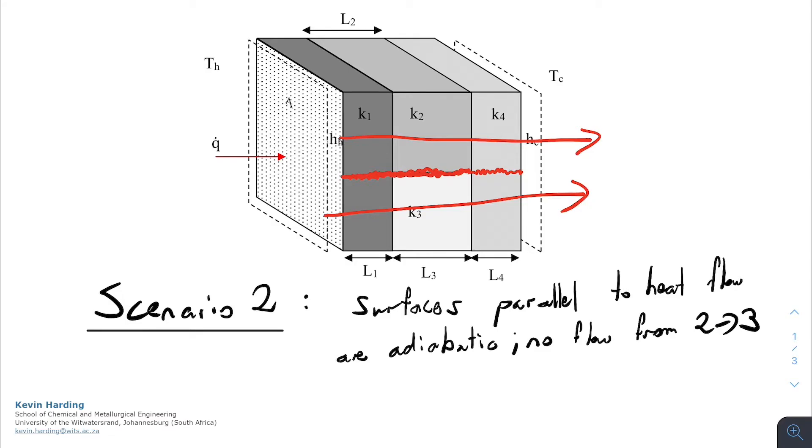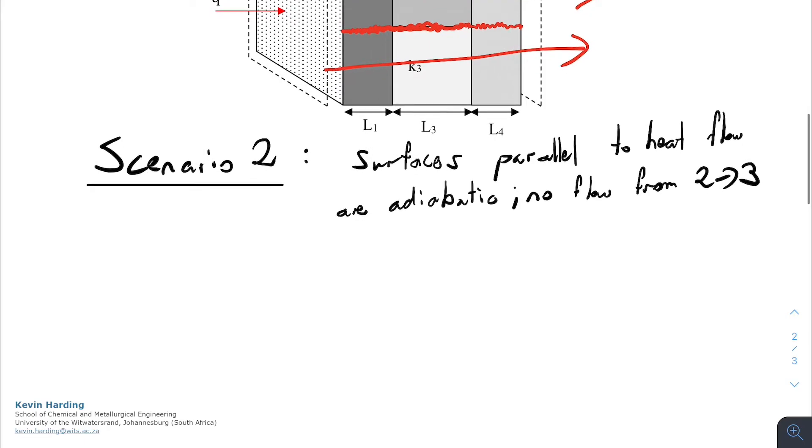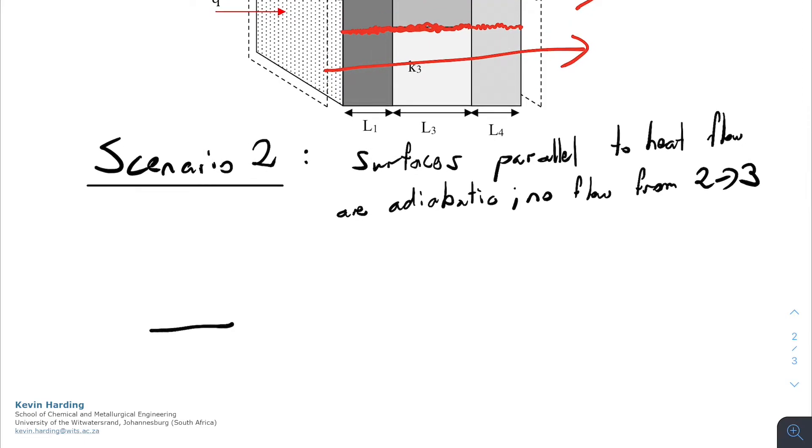If we have to draw this one in a thermal resistance diagram, we are now going to break this up entirely. And we are going to have two separate branches for each of the convection, the conduction of slab one, slab two and slab four.